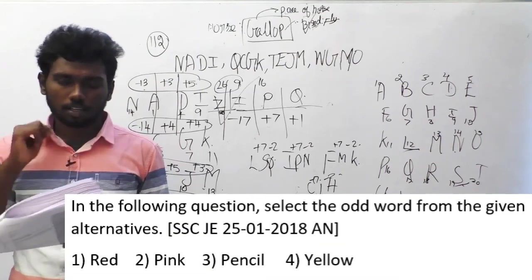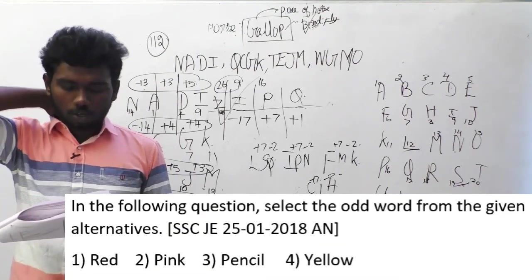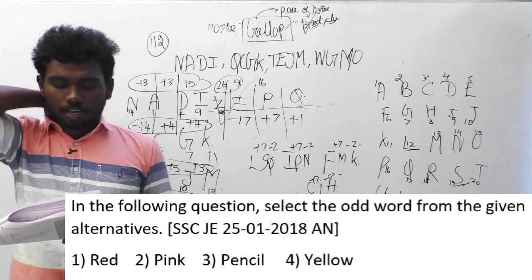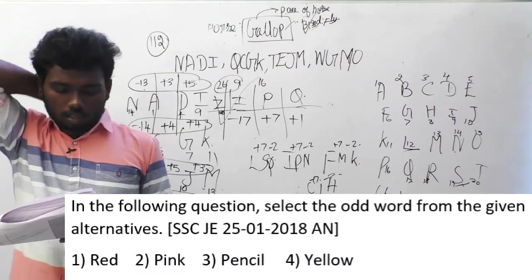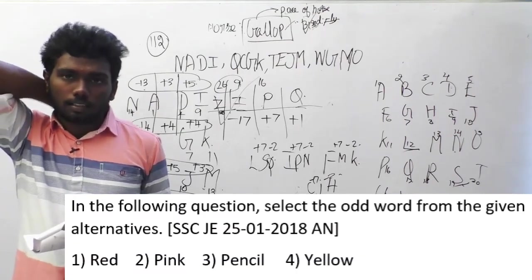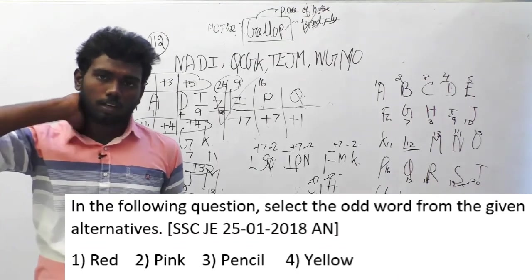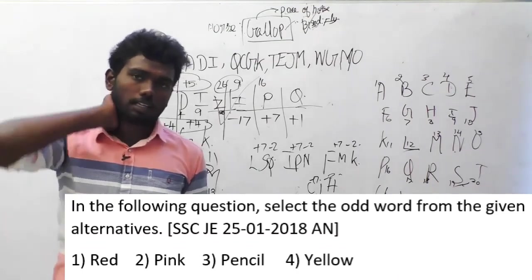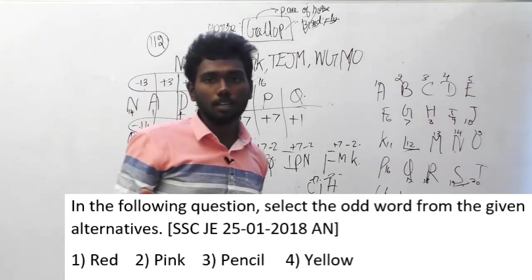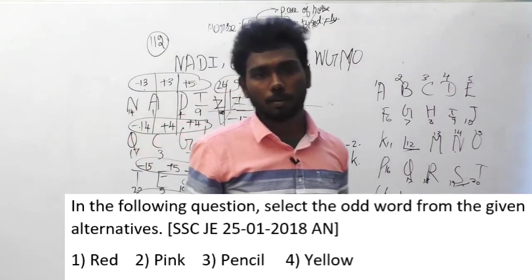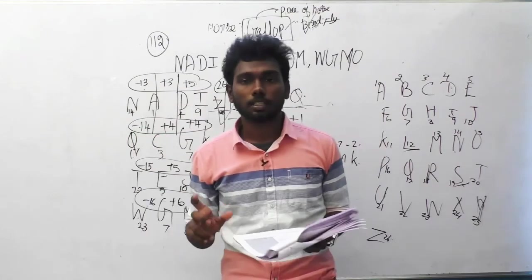What is the odd thing between them? Look carefully — red, pink, and yellow are colors, whereas pencil is a thing used for writing. So when giving three things as colors and providing the fourth one as a pencil, it will obviously be the odd thing. So the answer is option 3, pencil.